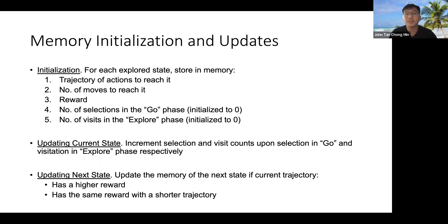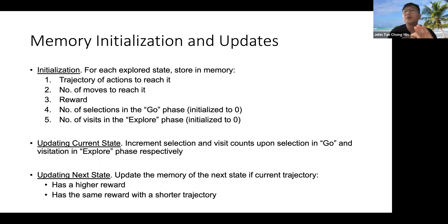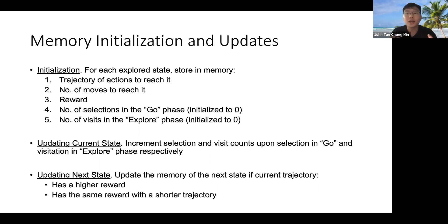For every state we visit, we initialize it with the trajectory of actions to reach it, the number of moves to reach it, the reward, the number of selections in the Go phase, and the number of visits in the Explore phase. We also increment the selection and visit counts upon every selection or visit accordingly.